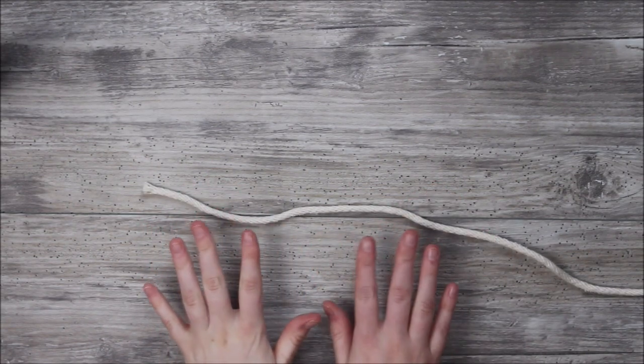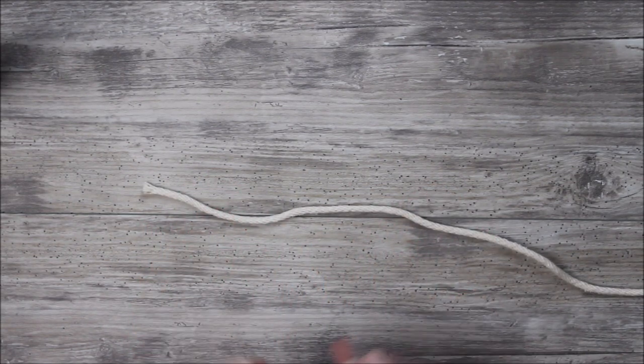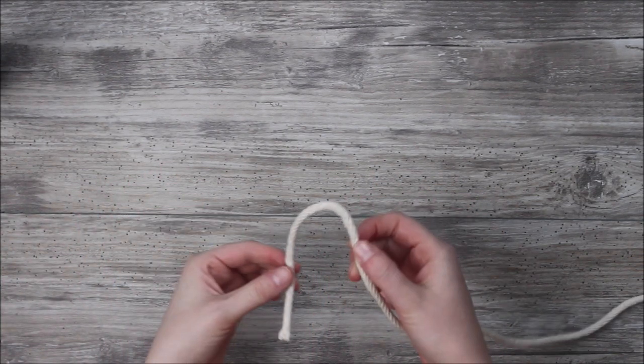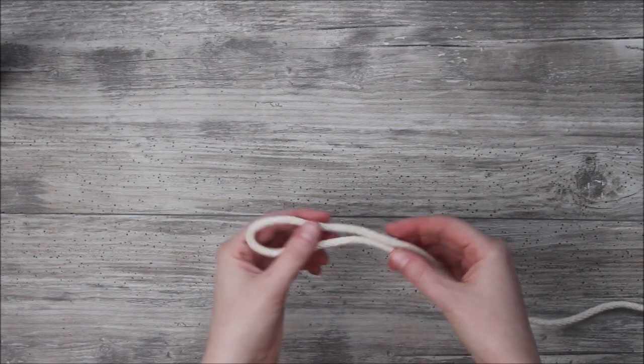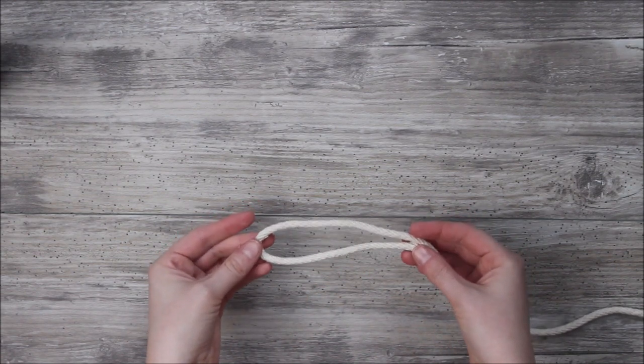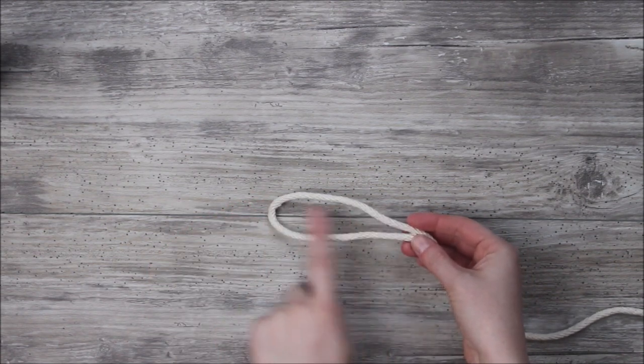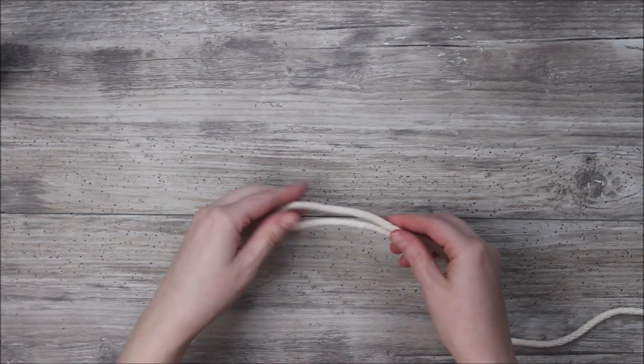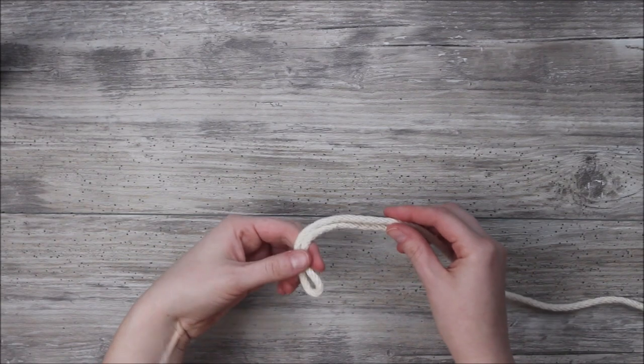Our first step is we're going to make ourselves our own little ball-type shape to act in place of our marble. What I like to do is take one end and just kind of fold it over itself, and then I take that doubled section and I just tie a simple overhand knot. Just your basic overhand knot. You guys all know how to tie these, I'm sure.